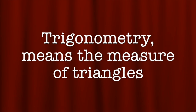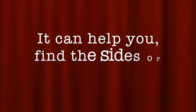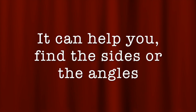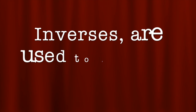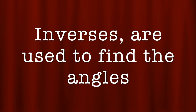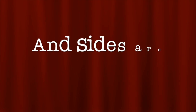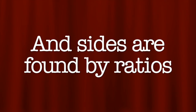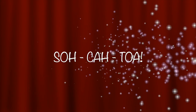Trigonometry means the measure of triangles. It can help you find the sides or the angles. Inverses are used to find the angles, and sides are found by ratios. SOH-CAH-TOA!